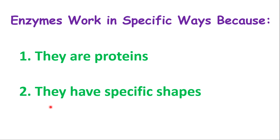Now let's jump into the way enzymes work and look at the properties of enzymes. It's very important for you to understand why enzymes work in a specific way. Enzymes work in specific ways because of two main reasons: one, because enzymes are proteins, and two, because they have specific shapes. All of the properties will be explained around these two characteristics of enzymes — enzymes are all protein, and they have specific shapes.